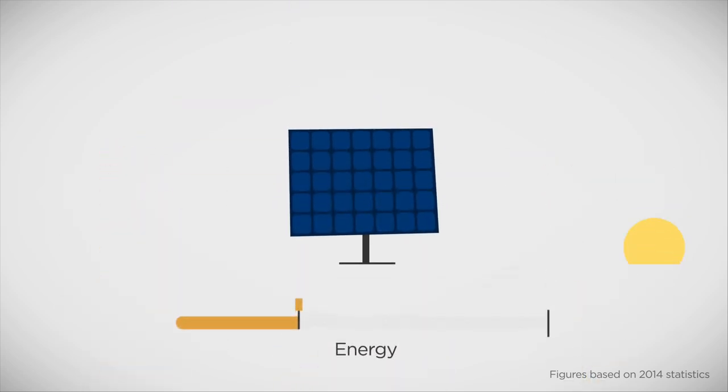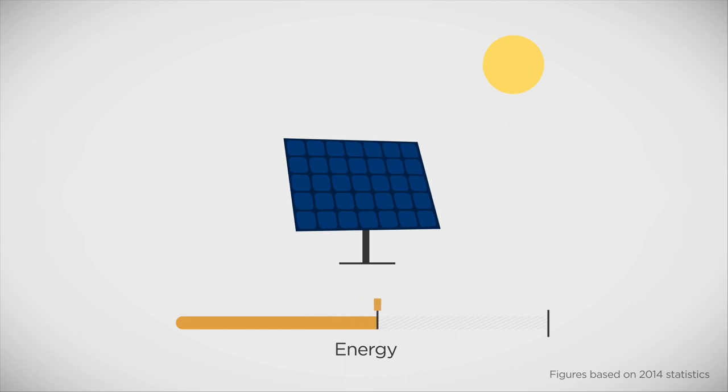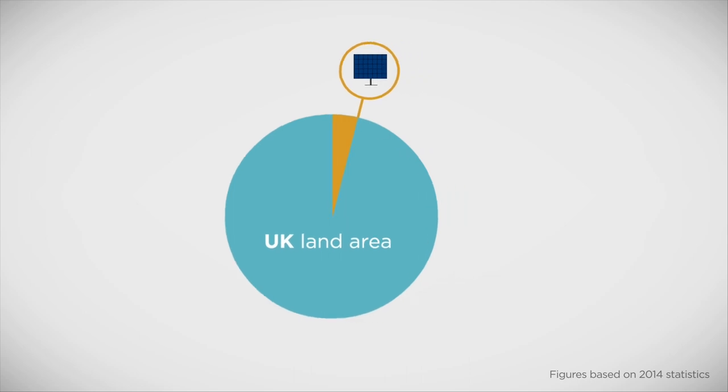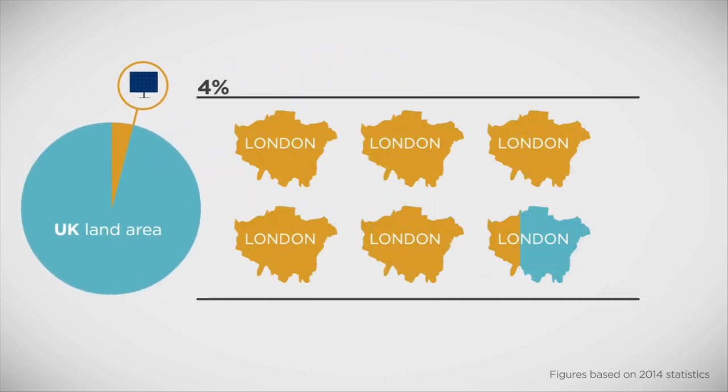Solar power harnesses energy from the sun. Covering around 4% of the UK in solar panels would produce all the energy we need. But that's the same land area as roughly six Londons.